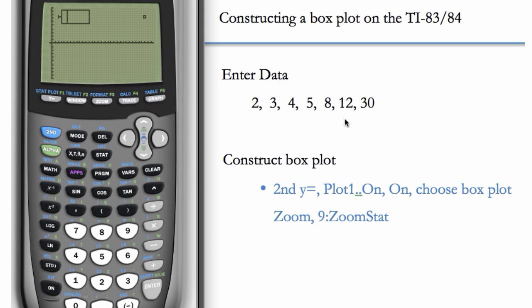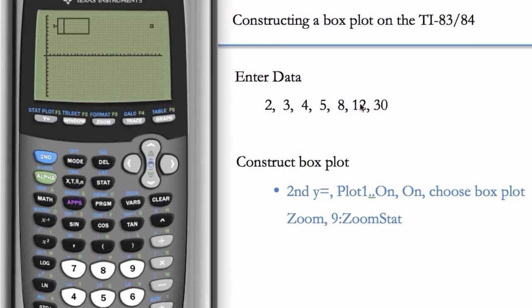So here we have this odd data set. Go ahead and identify Q1, the median, and Q3. So because this is an odd data set, there is a middle number, which in this case is 5. So this is the median. That still leaves three numbers in the lower half and in the upper half of the data set. So Q1 will be 3 and Q3 will be 12.